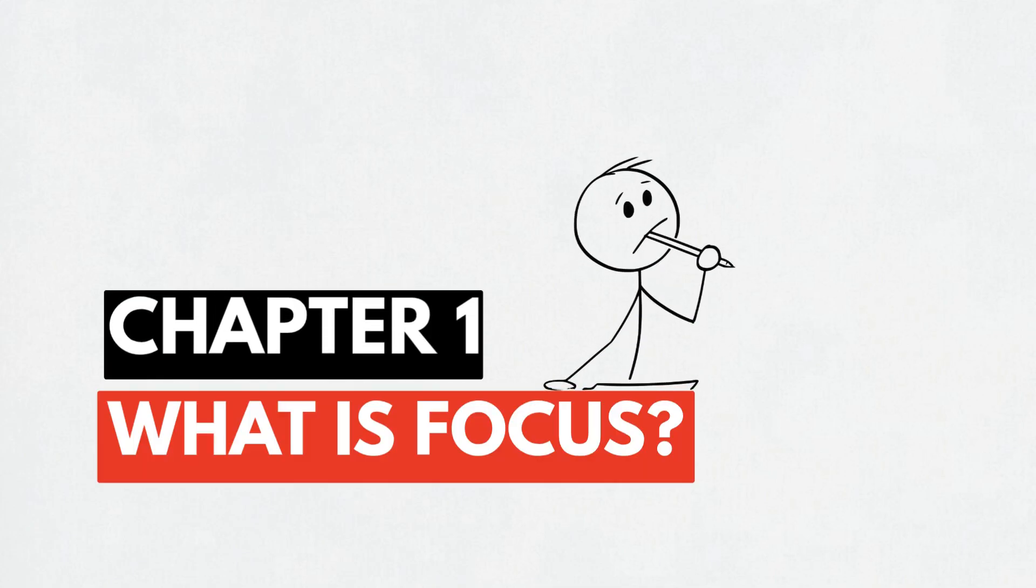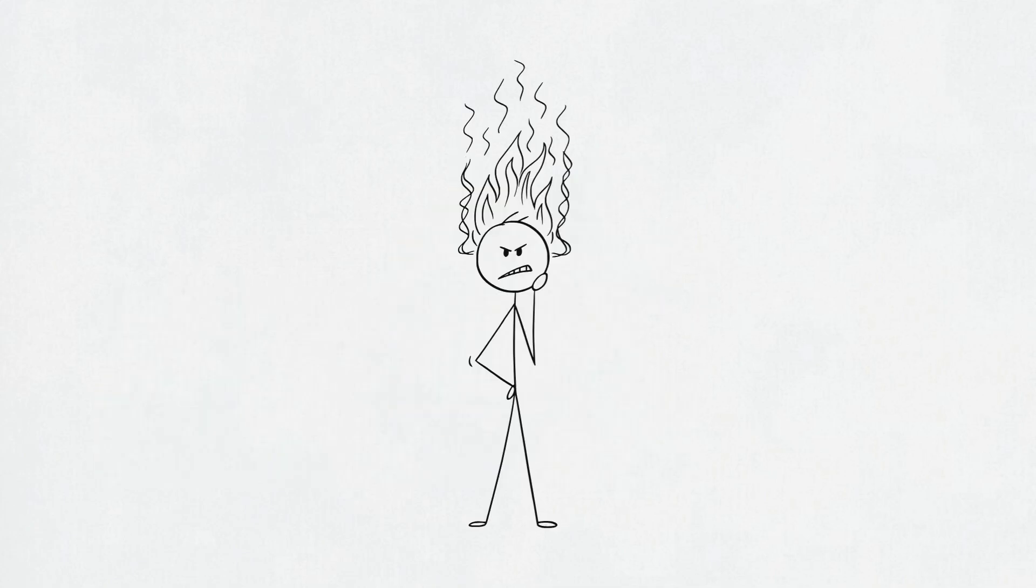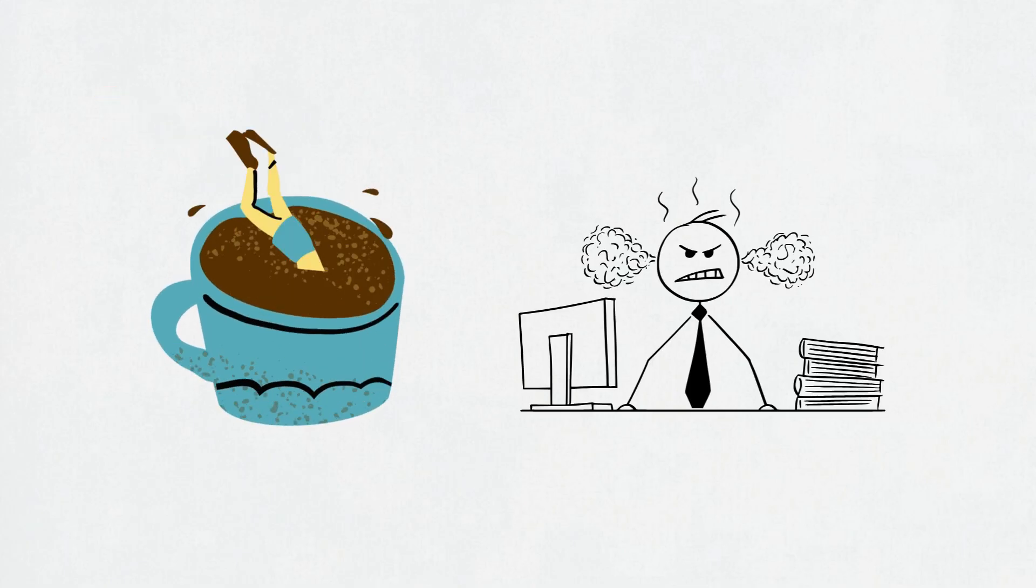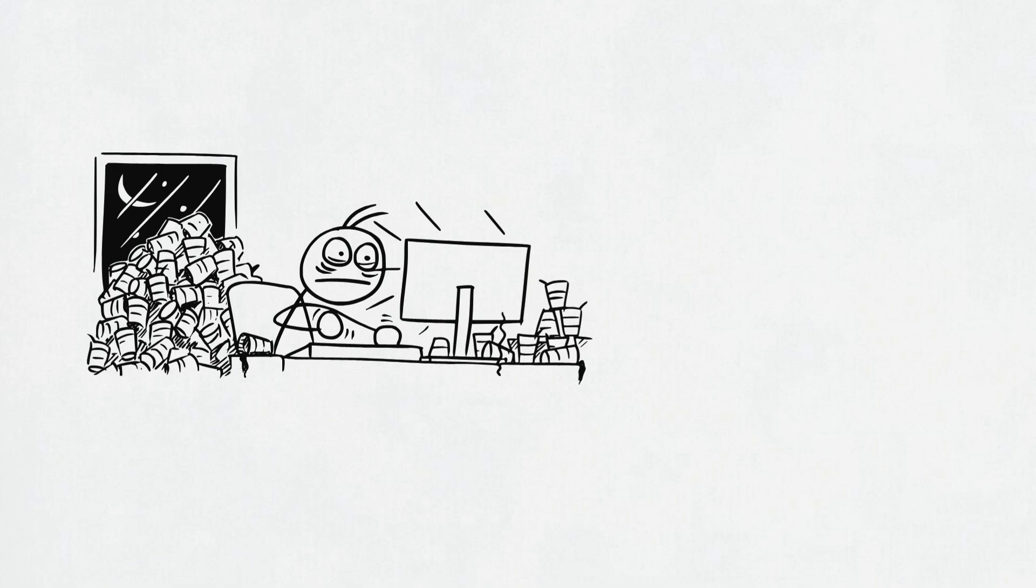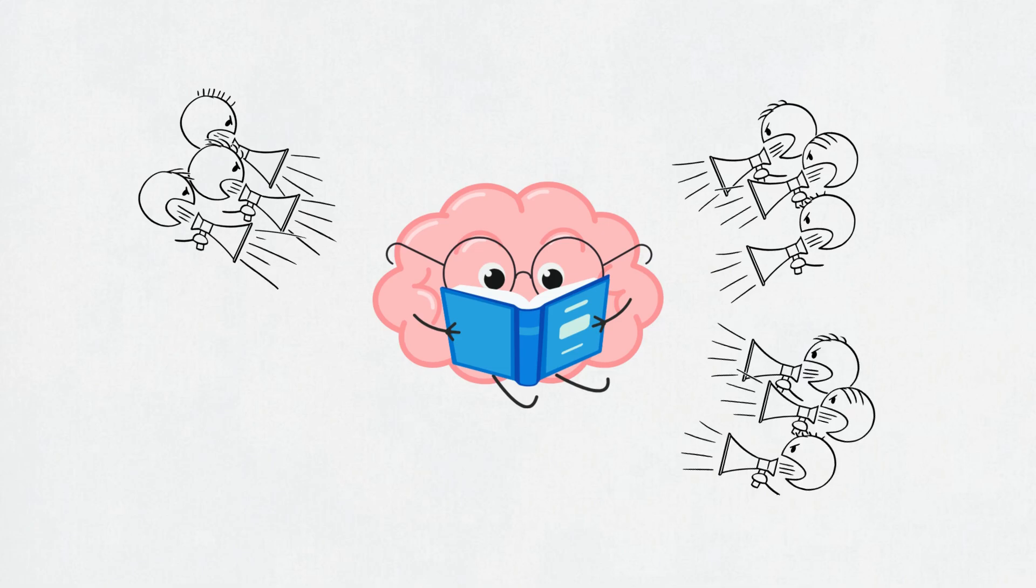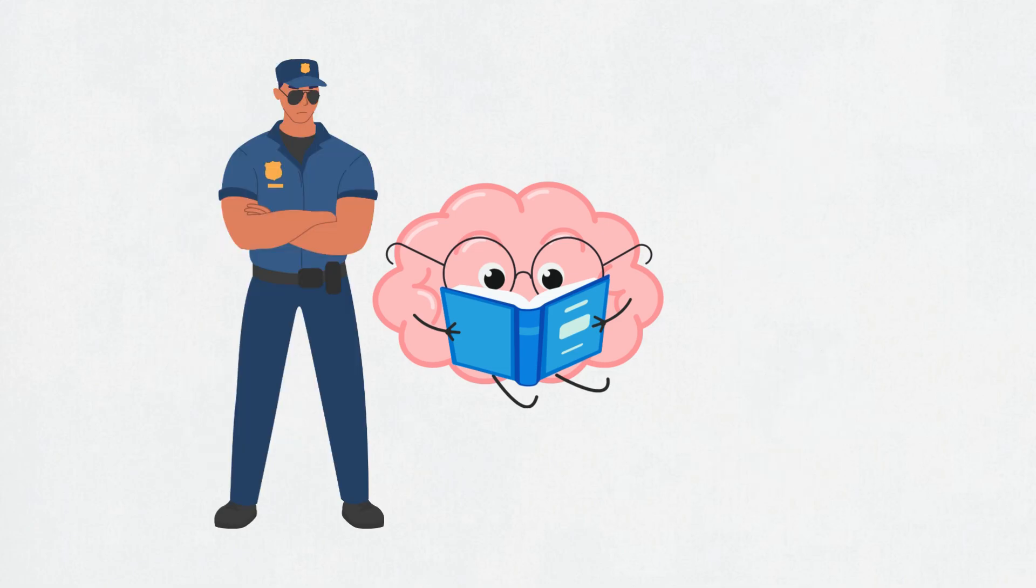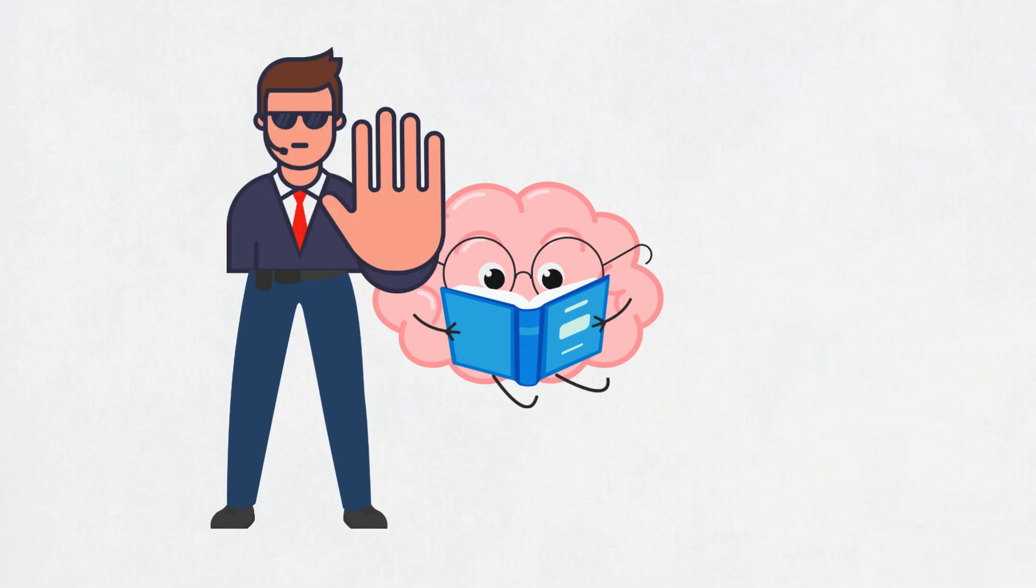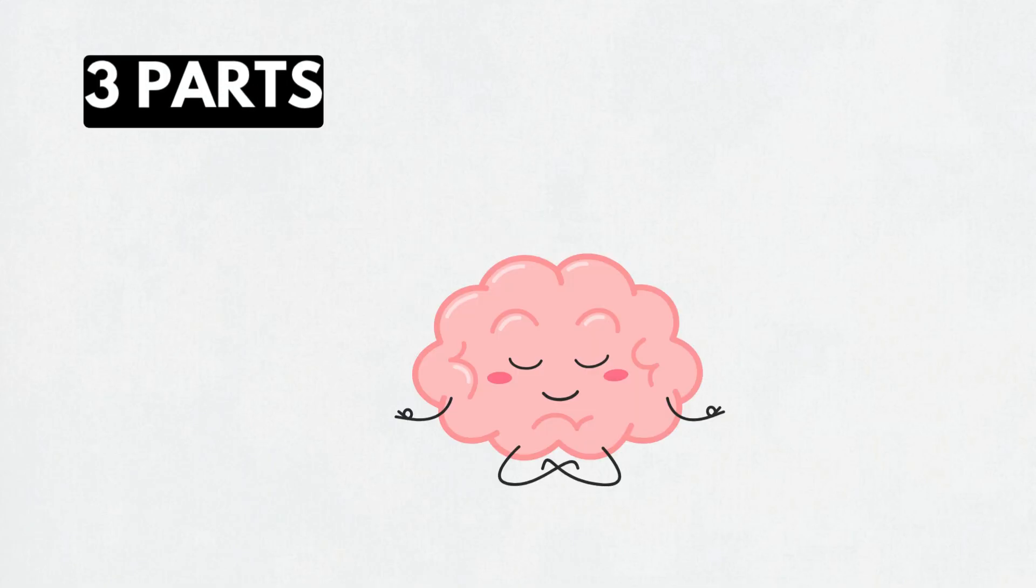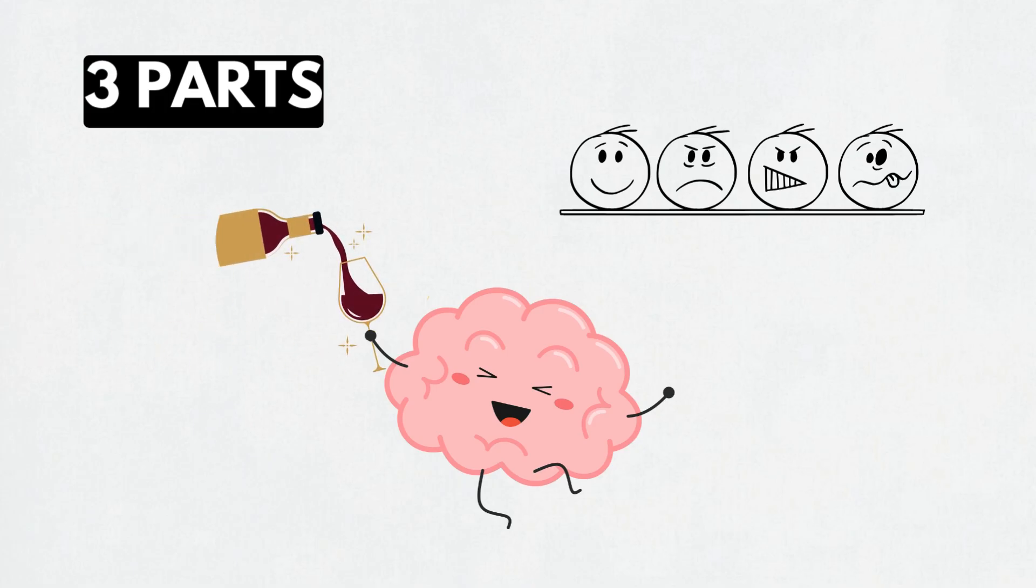Chapter 1. What even is focus? Let's be honest. Focus isn't just trying really hard. If that worked, coffee-fueled all-nighters would have turned us all into geniuses by now. Spoiler alert, they didn't. They just made us jittery and emotional over spreadsheets. Focus is your brain's ability to lock in on one thing while ignoring literally everything else screaming for attention. It's like having a mental bouncer standing at the door of your thoughts saying, nope, not today. You're not getting in. So, how does focus actually work? You can break it down into three parts. Your brain, your behavior, and your brain's very moody little chemical cocktail.